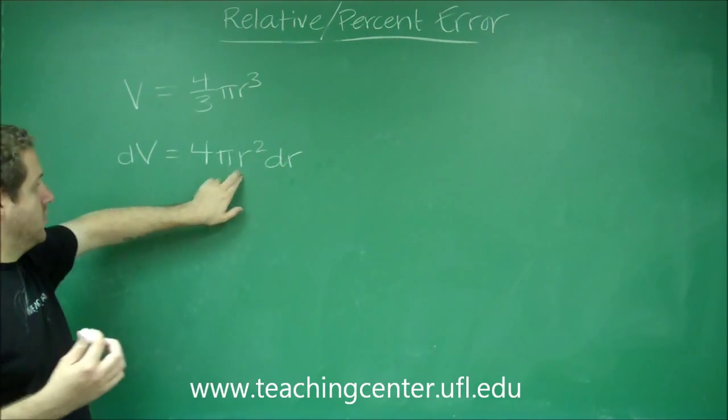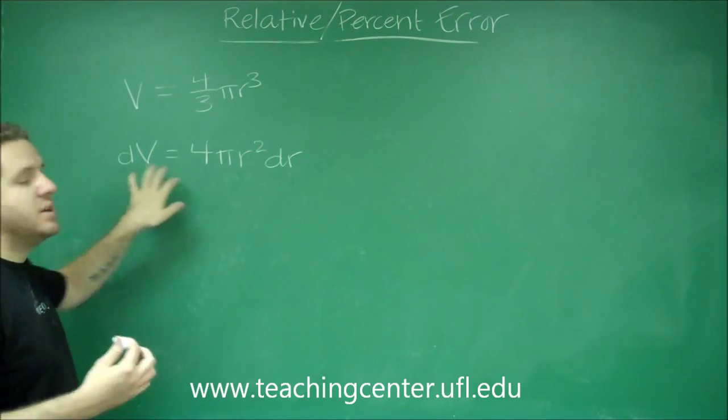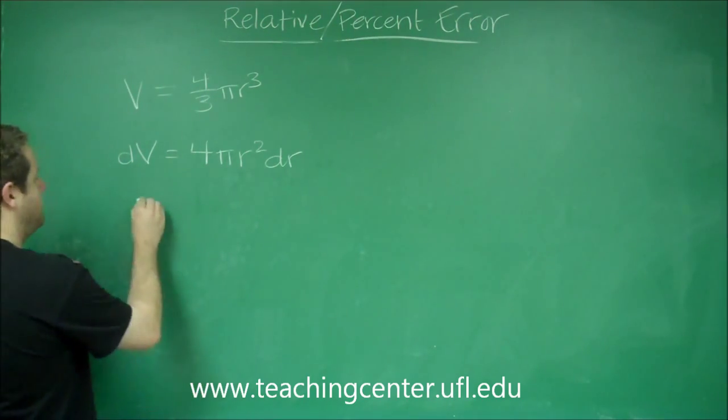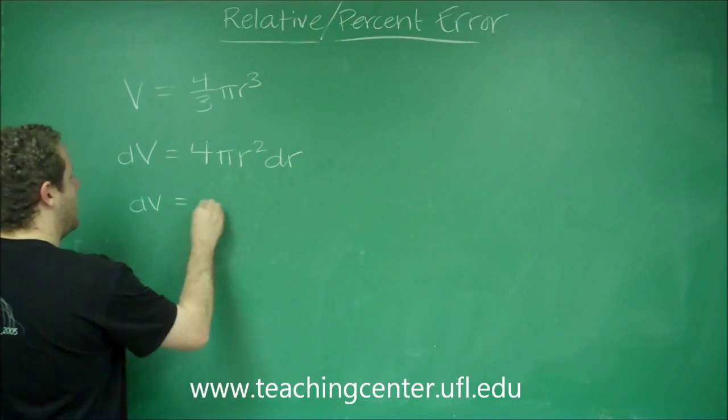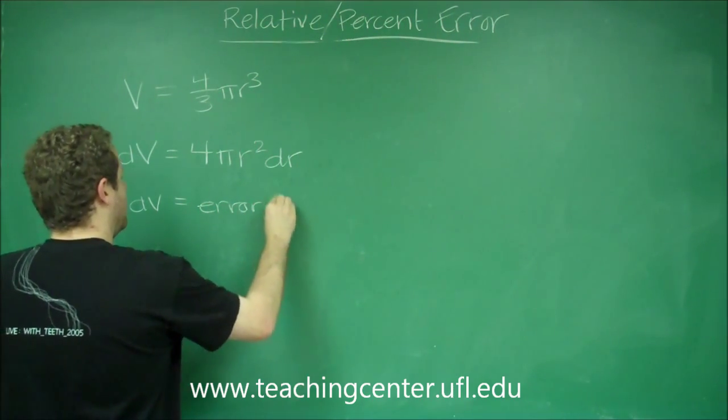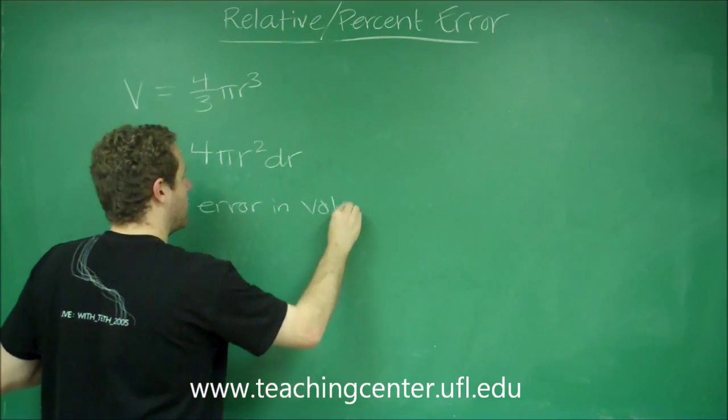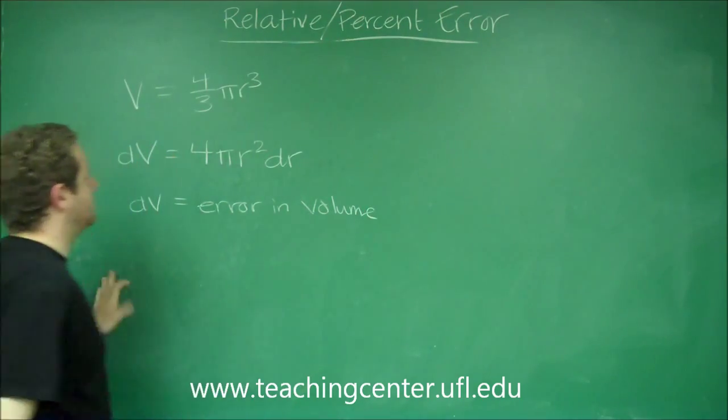The actual r goes here. And with this you can get dV, and dV is the error in volume. So that's the simple type of question.